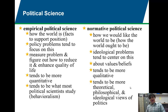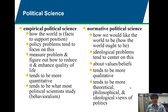Moving to the right-hand column, normative political science also has an important place. When you think about ideology and big world problems and how to handle them, you're often dealing with normative political science. Normative political science looks at how we would like the world to be — what is the most fair and just way to do this? It really cares about values and beliefs. It tends to be more qualitative, theoretical, philosophical, and ideological in its view of politics.